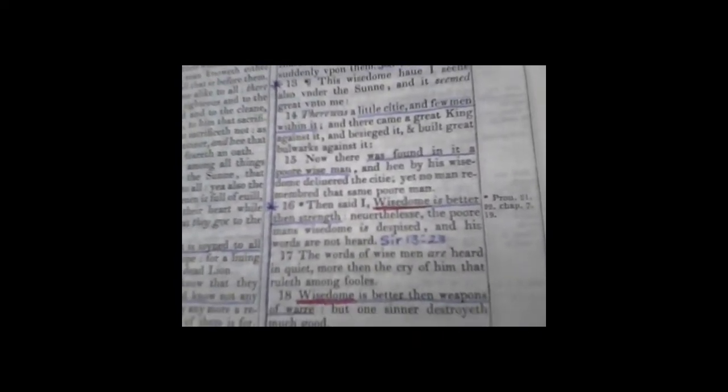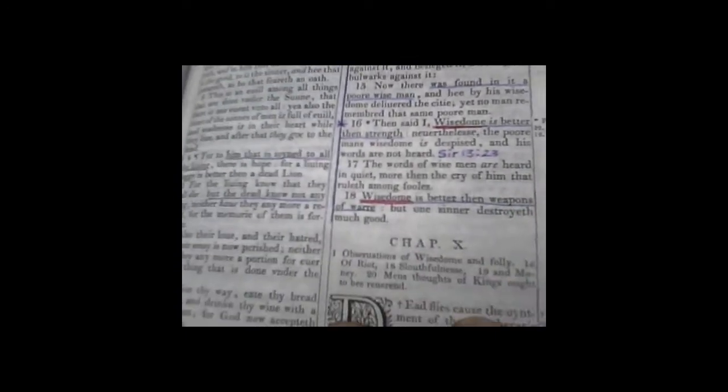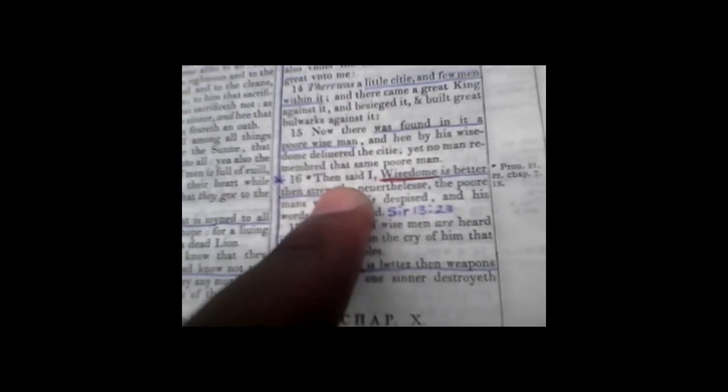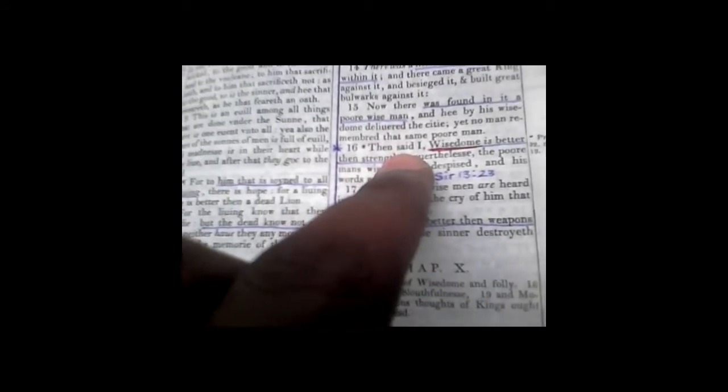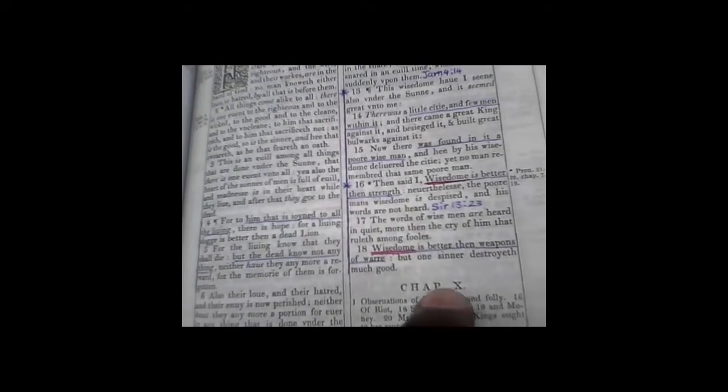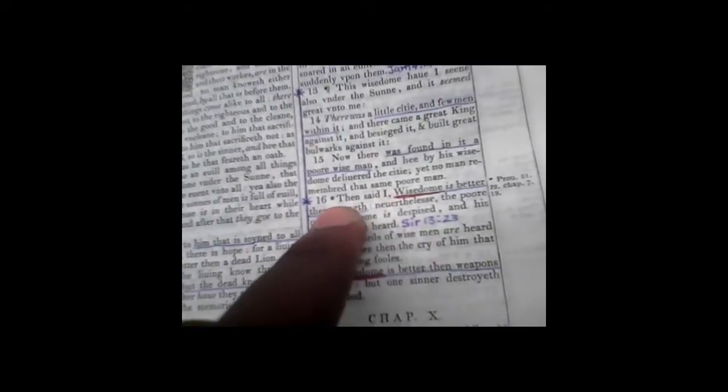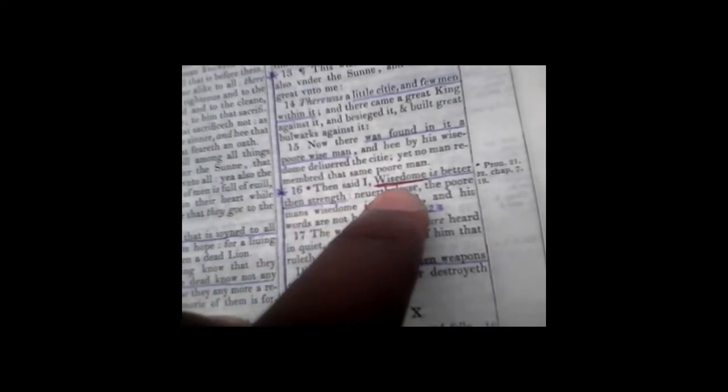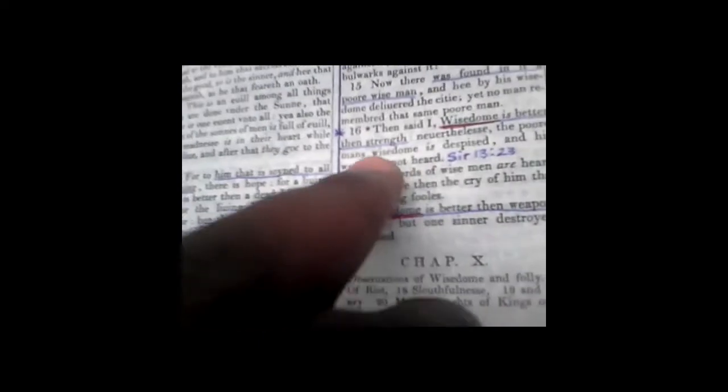I believe these scriptures I'm bringing through this series show you that you hold on to things that are going to be taken. This is Ecclesiastes 9 verse 16: Then said I, wisdom is better than strength. Nevertheless, the poor man's wisdom is despised. So Noah's wisdom was despised.